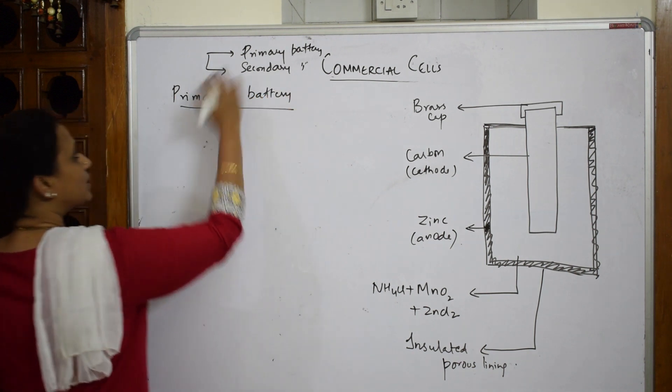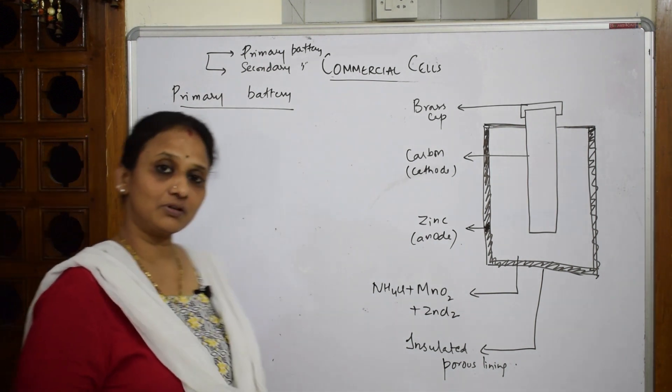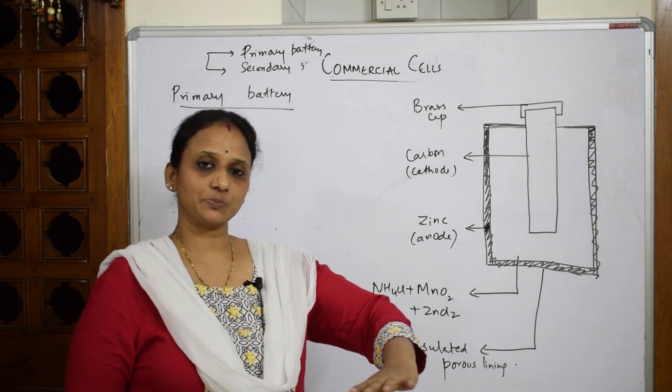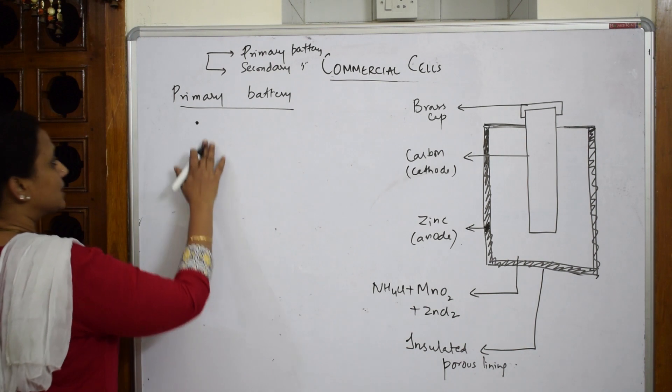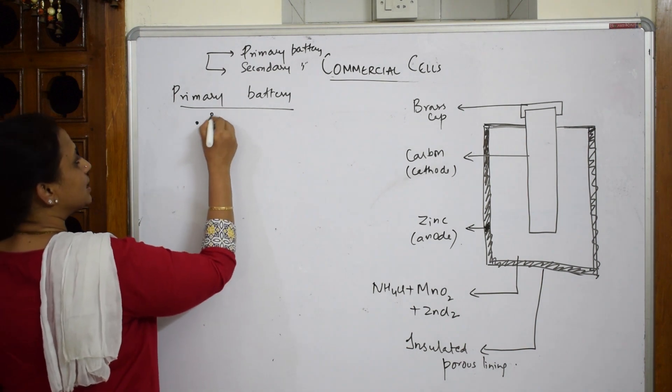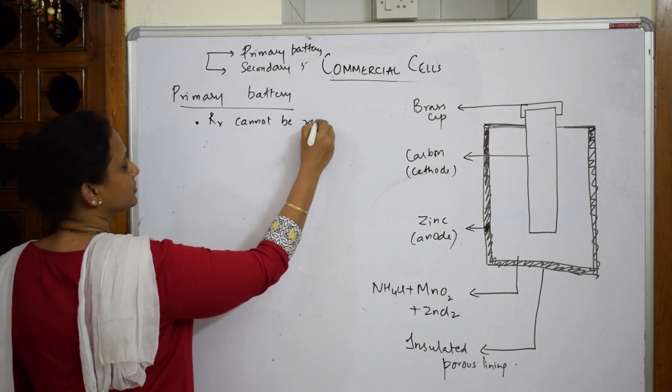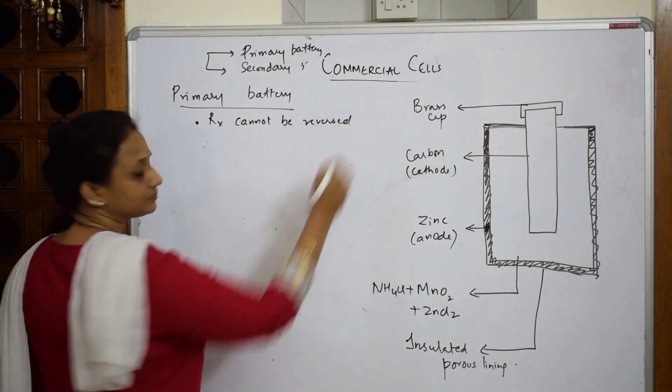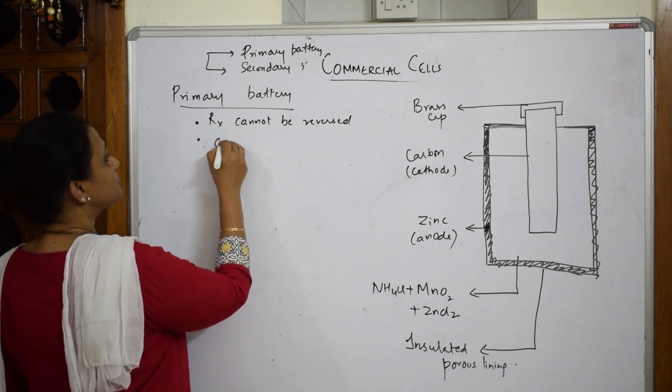In primary battery, the first important thing is they are quite opposite of secondary battery. The important concept is once the reaction is produced, it can't be reversed. Remember, in primary batteries, reactions cannot be reversed, they are irreversible in nature, only in the forward direction.